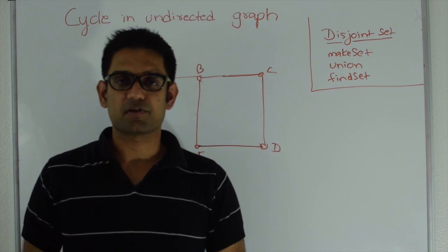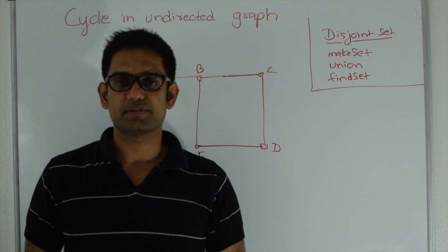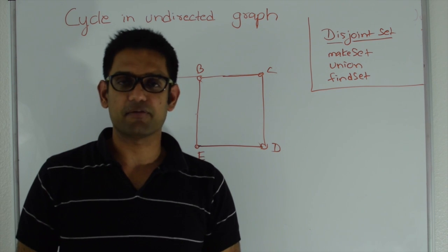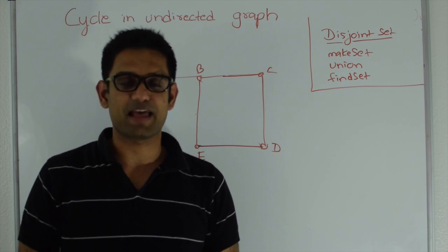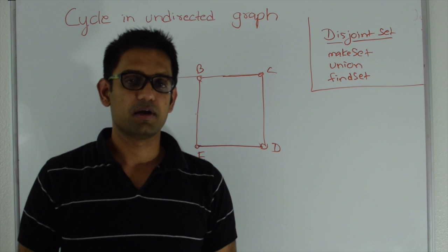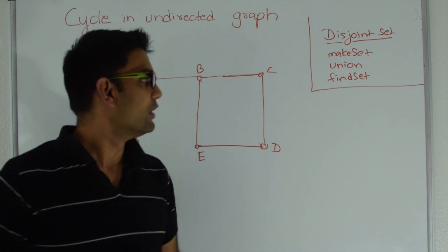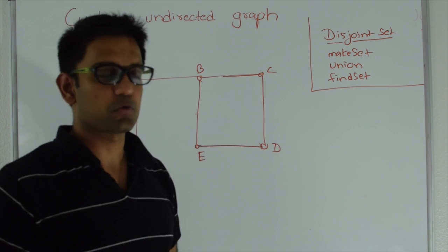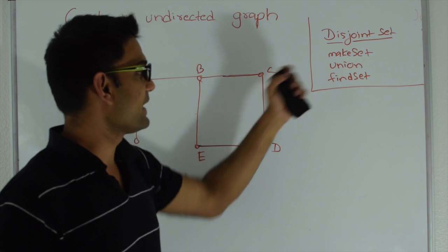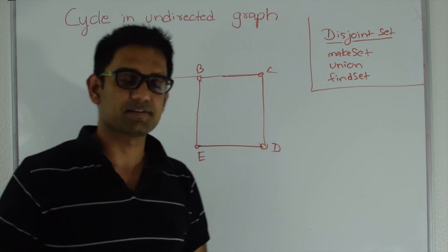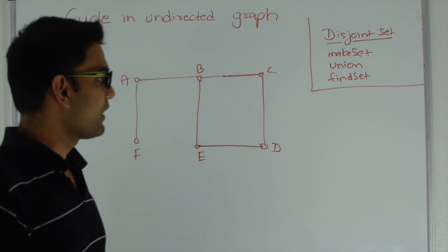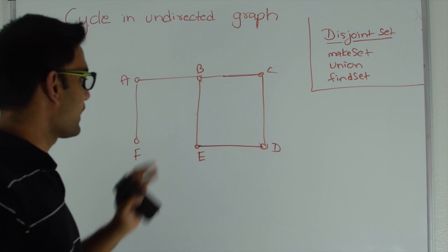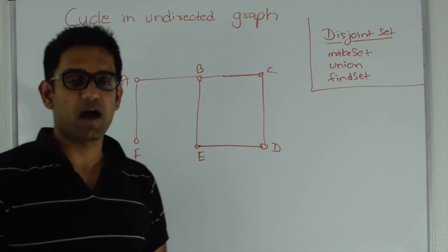In another video I talked about how disjoint sets work, and if you have not watched that video I highly recommend you watch it before continuing. So if you remember, disjoint sets supports three operations: make set, union, and find set. Let's see how we're going to use disjoint sets to find a cycle in an undirected graph.